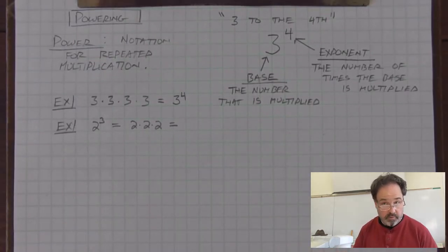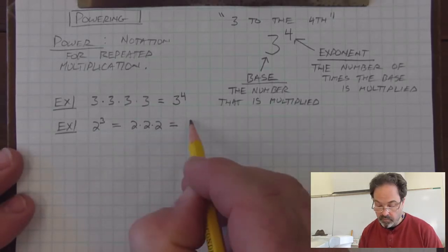And we could evaluate this. We could grab a calculator. We could do the multiplication. 2 times 2 times 2 is 8.